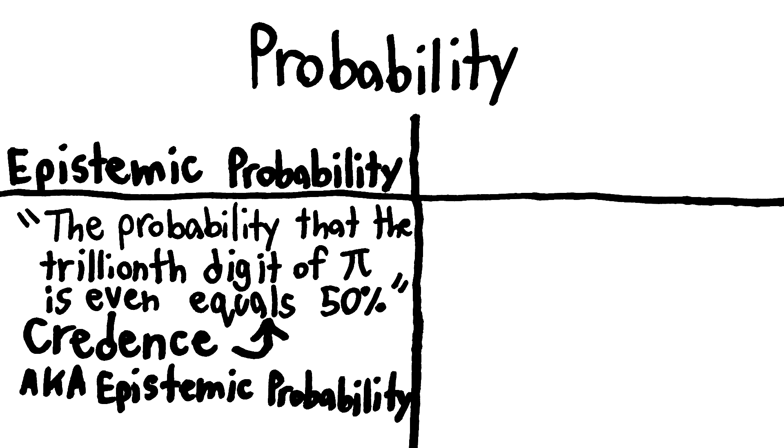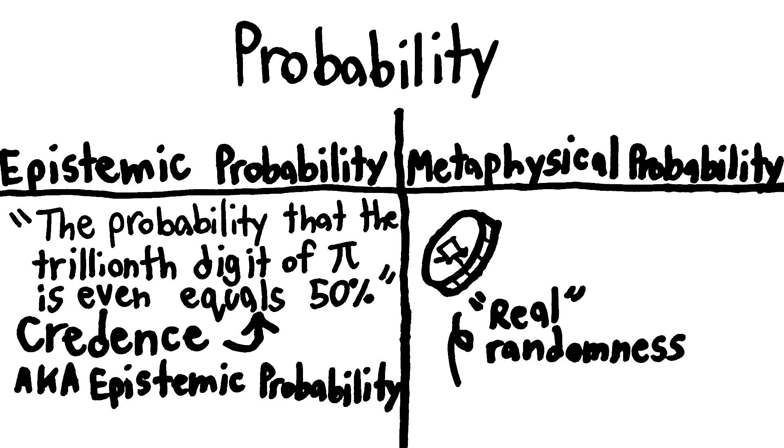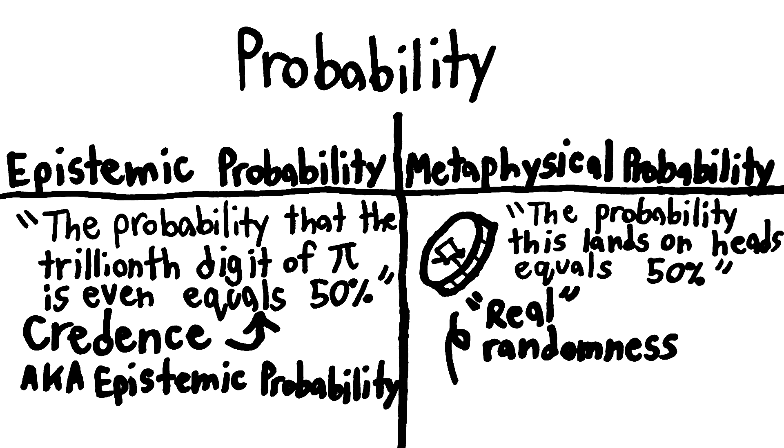However, if you want to say that there's some randomness outside your head in the real world, that's metaphysical probability. Like, if we had a truly random coin with a 50-50 chance of landing on heads, then it's not just a lack of knowledge that makes us unable to predict the outcome. It's truly random and could go one way or the other.